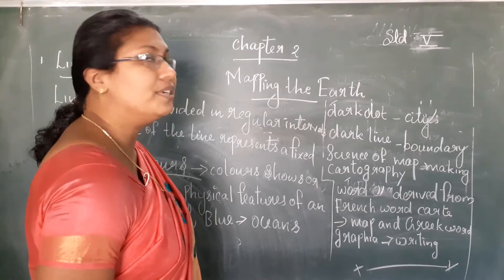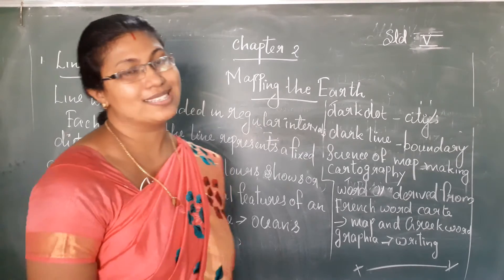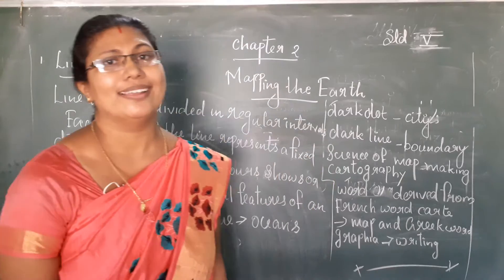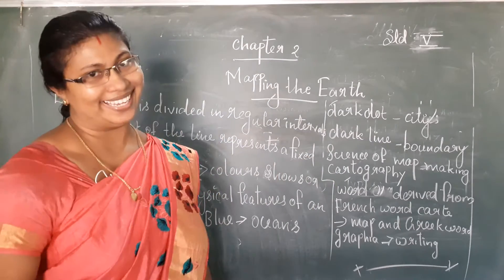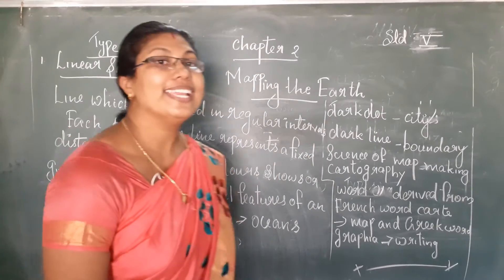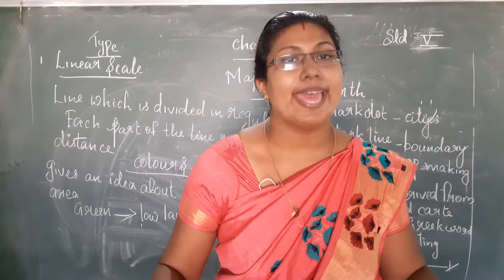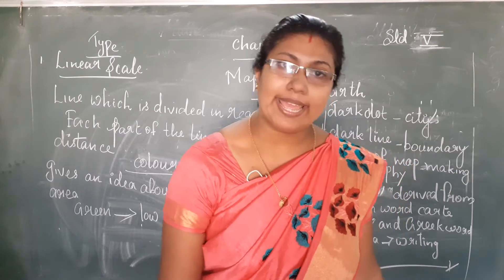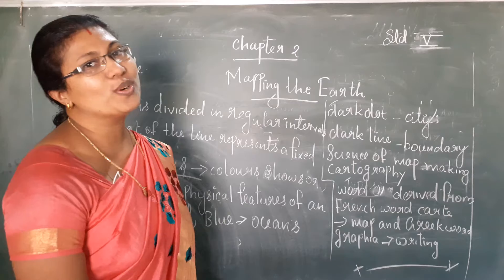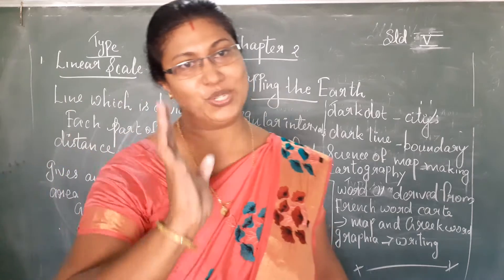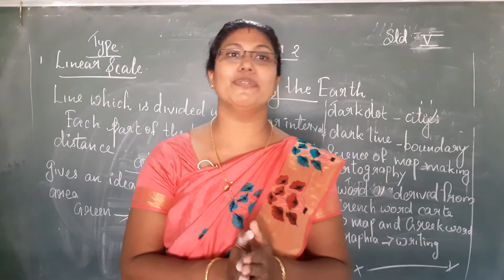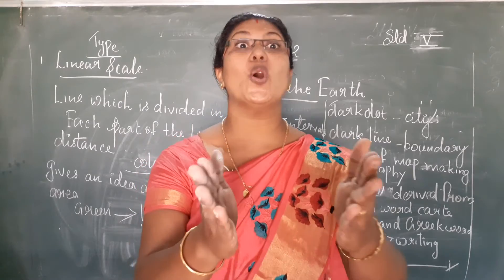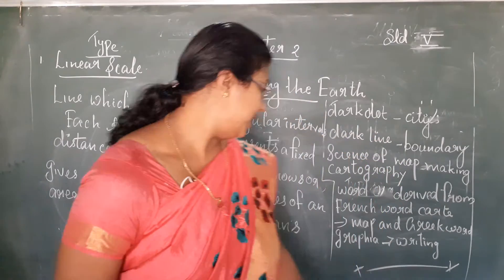Next we have to deal with colors. First, green color — what does green color indicate? Green color indicates low land. Then next is blue color, which we already discussed. In the last chapter also we were dealing with blue color: it indicates oceans and water portions.